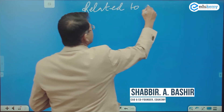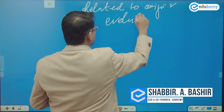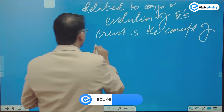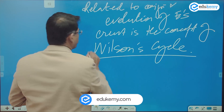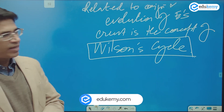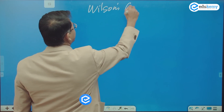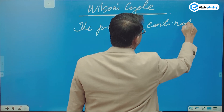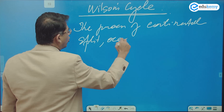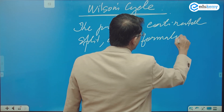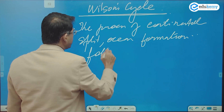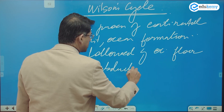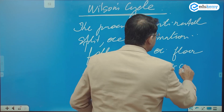Related to the origin and evolution of Earth's crust is the concept of Wilson's Cycle. The Wilson Cycle describes the process of continental split and ocean formation, followed by ocean floor subduction.